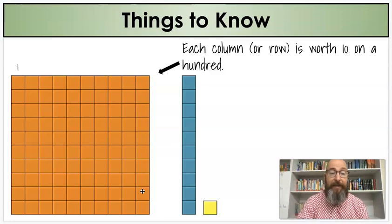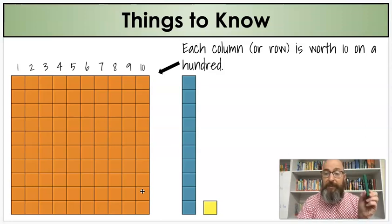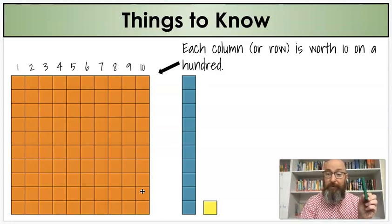Each row or column has ten of these because it's a perfect square. You can see that there are ten in each column. There's ten columns of ten. There's one, two, three, four, five, six, seven, eight, nine, ten.